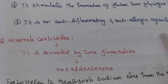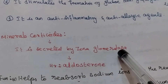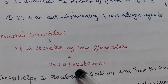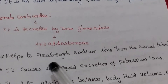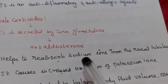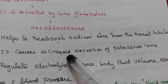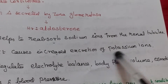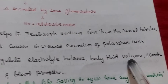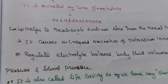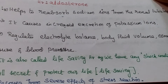The second type is mineralocorticoids, secreted by the zona glomerulosa. The hormone secreted is called aldosterone. Its functions include helping to reabsorb sodium ions from the renal tubules, increasing excretion of potassium ions, and regulating electrolyte balance, body fluid volume, osmotic pressure, and blood pressure.